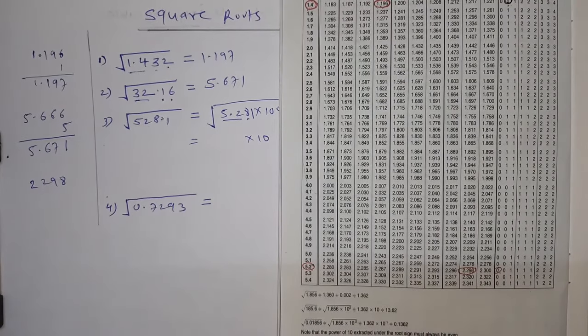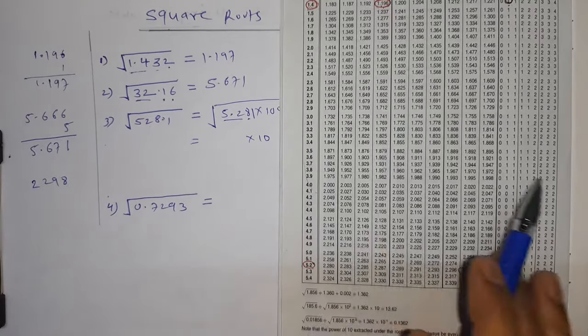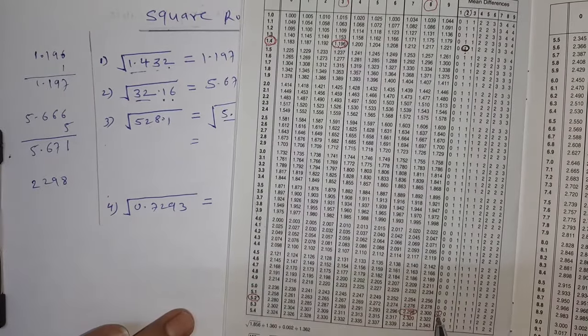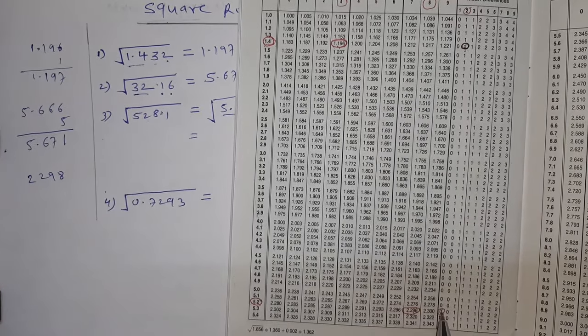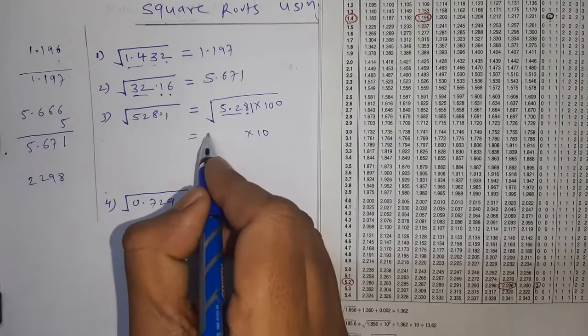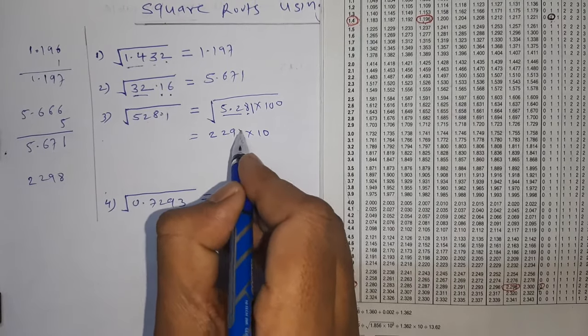So what is the number? 2298. My fourth digit 1, that will say mean difference, that is equal to 0. So 2298 plus 0 equals 2298. So square root of this is 2.298.